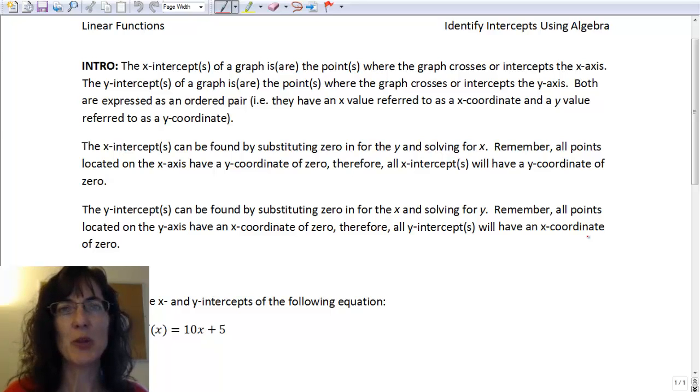Identify intercepts using algebra. The x-intercept of a graph is the point or points, sometimes there's more than one, where the graph crosses or makes an intersection with the x-axis. Remember the x-axis is the horizontal axis.